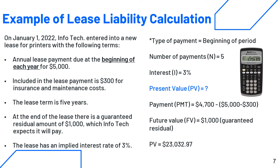Here's an example on how to calculate the lease liability. On January 1st, 2022, Infotech entered into a new lease for printers. There are annual lease payments due at the beginning of each year for $5,000, of which $300 is for insurance and maintenance. The lease term is five years, there is a guaranteed residual amount of $1,000, and the implied interest rate is 3%. You would enter N=5, I=3%, PMT=$4,700 (which is $5,000 minus the $300 for insurance and maintenance), and FV=$1,000 as the guaranteed residual value. Computing the present value gives approximately $23,000 as the lease liability.